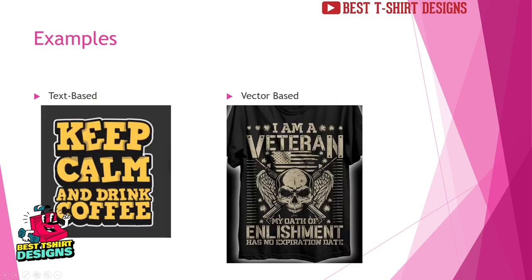Here are some examples. This is a text-based example: 'Keep Calm and Drink Coffee.' The design uses only some text — no graphics, no fancy editing, just text placed line by line with some shadow. This is called a text-based design; it doesn't have to be very creative or artistic. And here is a vector-based design example, where we use vectors like a skull, gun, wings, flag, and bullets just to represent an idea. This is called a vector-based t-shirt design.